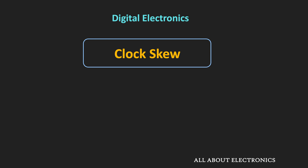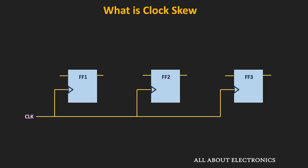Clock skew is a phenomenon which is often seen in synchronous digital circuits. We have assumed that in synchronous digital circuits, when we apply the clock signal, all the flip-flops receive the clock at the same time. But actually, different parts of the circuit receive the clock at different times — and this phenomenon is known as clock skew.